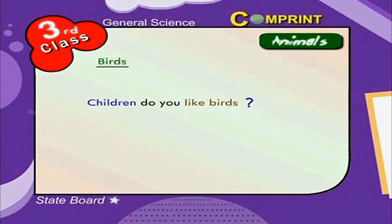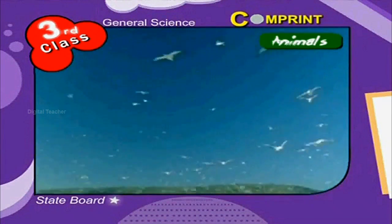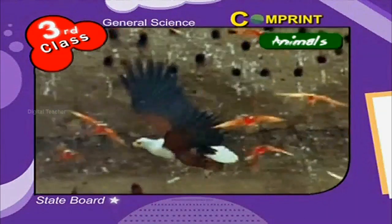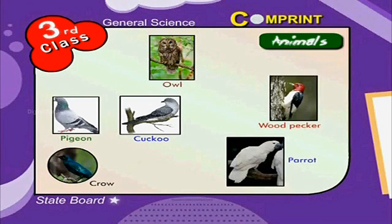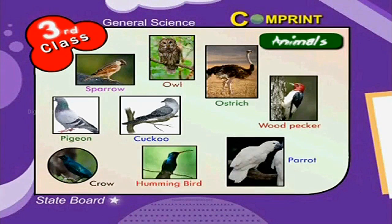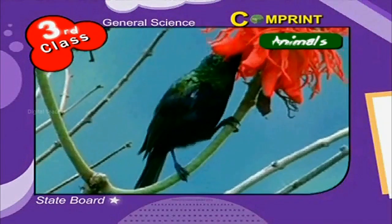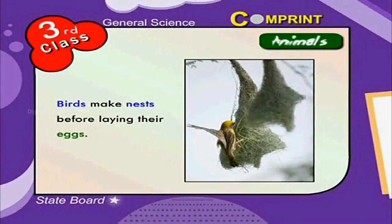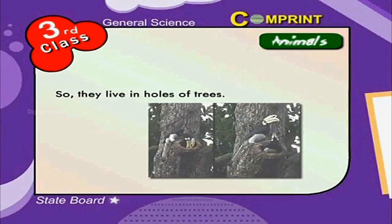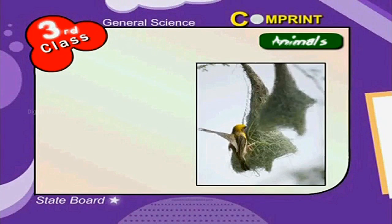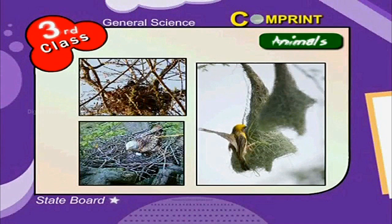Birds — children, do you like birds? It is very interesting to know about them. They come in different sizes, colors and shapes. Have a look at them: crow, cuckoo, heron, woodpecker, owl, parrot, sparrow, ostrich, hummingbird, etc. The ostrich is the biggest of all birds, whereas the hummingbird is the smallest. Birds make nests before laying their eggs. Some birds cannot make nests themselves, so they live in holes of trees. Look at the pictures: nest of a weaver bird, a kite's nest and a crow's nest.